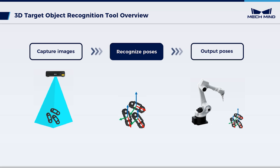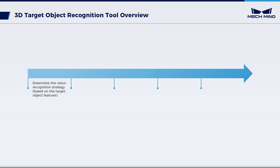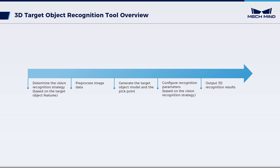The process of object pose recognition goes through five steps: determine the vision recognition strategy based on the target object features, pre-process image data, generate the target object model and the pick-point, configure recognition parameters aligned with the vision recognition strategy, and output 3D recognition results.